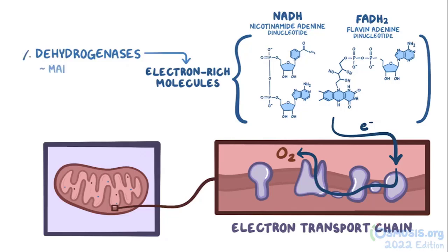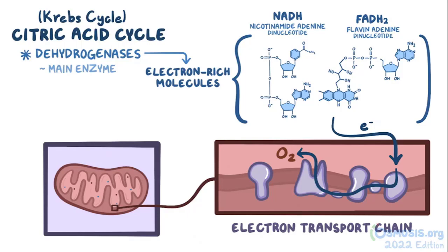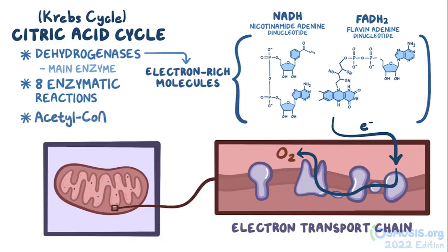The cell has to produce NADH and FADH2, and they're produced by critical enzymes called dehydrogenases. Dehydrogenases are the main enzymes found in the citric acid cycle, also known as the Krebs cycle. The citric acid cycle is a set of eight enzymatic reactions that start with a molecule called acetyl-coenzyme A, usually just acetyl-CoA. Four of the enzymes, or half of them, are dehydrogenases, and in this process, acetyl-CoA gets converted into carbon dioxide.